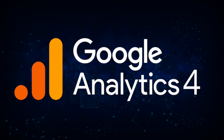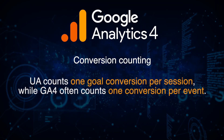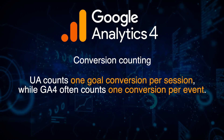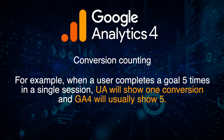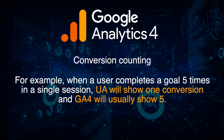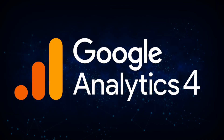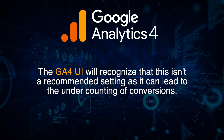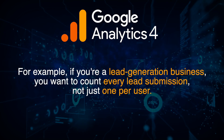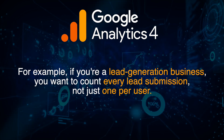Let's dive deeper into the most common reasons for conversion count issues between Universal Analytics and Google Analytics 4. Conversion counting: UA counts one goal conversion per session, while GA4 often counts one conversion per event. For example, when a user completes a goal five times in a single session, Universal Analytics shows one conversion and GA4 usually shows five. To fix this, set up a once-per-session counting system. Note that GA4 will warn this isn't recommended as it can lead to undercounting — for example, if you're a lead generation business, you want to count every lead submission, not just one per user.